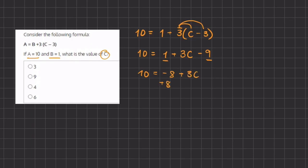Now we can add 8 on both sides. These two will cancel out and we are left with 18 equals 3c.